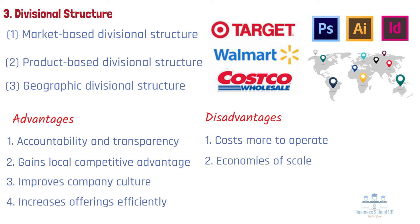Type 6: Network structure. A network structure is one in which more than one organization combines to produce a good or provide a service. These organizations can either get into a partnership for a particular venture, or one organization can hire others to handle one or more of its functions, such as marketing, production, sales, and so on. An organization that has been using a network structure is H&M, a multinational clothing company based in Sweden. H&M has outsourced the production and processing of its goods to different Asian countries.